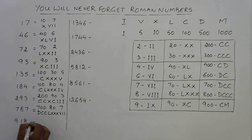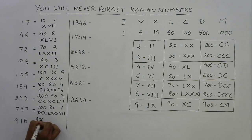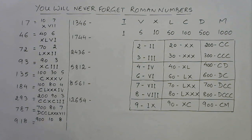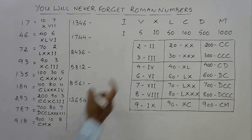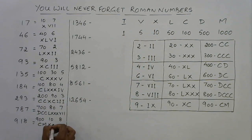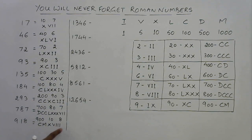For 918: 900 is CM, 10 is X, and 8 is VIII, so 918 is CMXVIII.